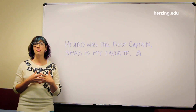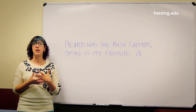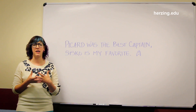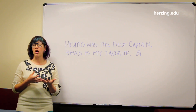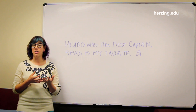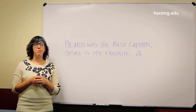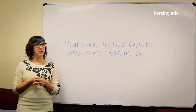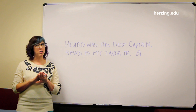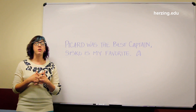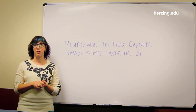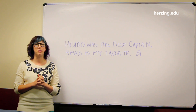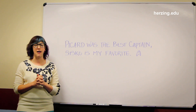A lot of times in creative writing, an author might use a comma splice to indicate that a character's thoughts are racing. But in academic writing, you don't want your thoughts to be racing. You want your thoughts to be clear, and you want your reader to understand how different thoughts are related. And a comma splice can confuse that.